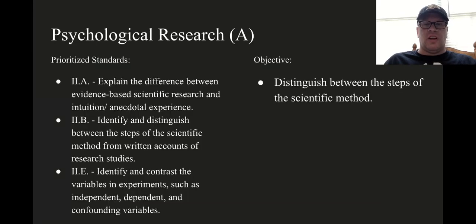All right, that was psychological research, section A lecture. Our prioritized standards were 2A, B, and E. Objectively, now you can distinguish between the steps of the scientific method. We'll see you next time.